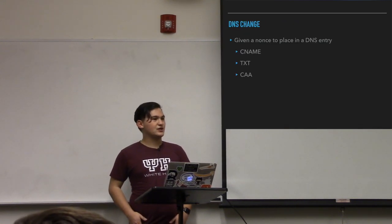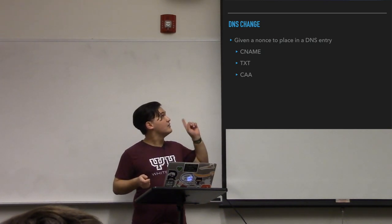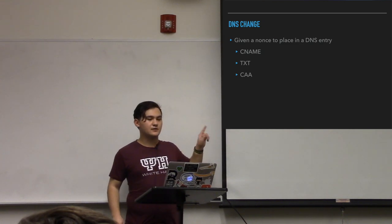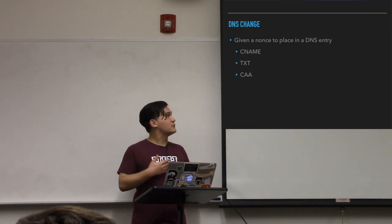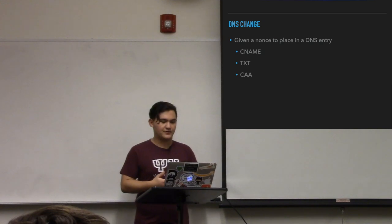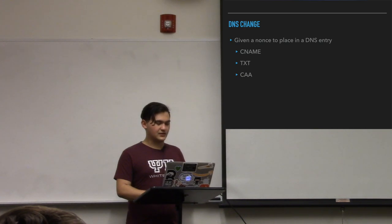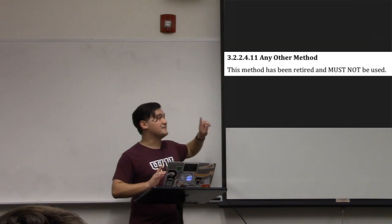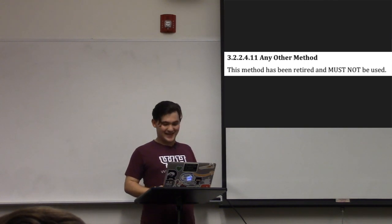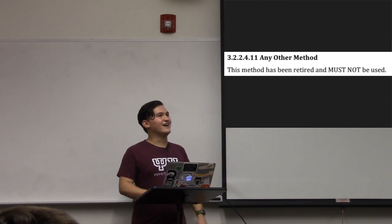Additionally there can be an agreed-upon change to the website: the requester is given a nonce to place on their website in some agreed-upon location, and the CA will go to that location and check to see if it gets back the value it gave to the requester. And finally there's a DNS change — the requester is given a nonce to place in a DNS entry, and the requirements specifically say it must be a CNAME, TXT, or CAA (certificate authority authorization) entry. This works similarly to a website change except it's a DNS lookup rather than an actual request to the website. And then there's 'any other method' — this method has been retired and must not be used. That is the entire section of that text. That's what the CA/Browser Forum guidelines look like occasionally.